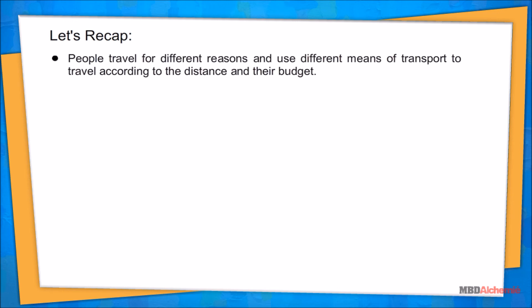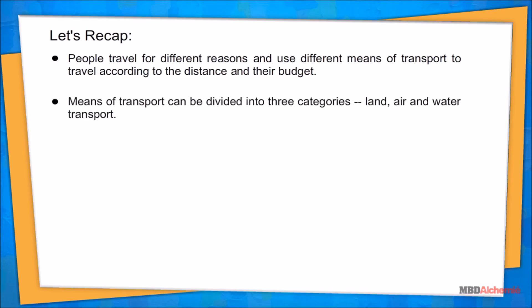Let's recap: people travel for different reasons and use different means of transport according to the distance and their budget. Means of transport can be divided into three categories: land transport, water transport, and air transport.